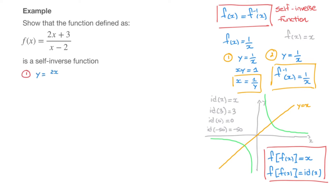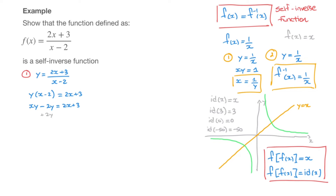Step 1: I start from y equals 2x plus 3 over x minus 2, and rearrange to make x the subject. I get rid of the denominator x minus 2 by multiplying both sides by x minus 2, giving y times x minus 2 equals 2x plus 3. I distribute: xy minus 2y equals 2x plus 3. I add 2y to both sides, leading to xy equals 2x plus 2y plus 3. Then I subtract 2x from both sides: xy minus 2x equals 2y plus 3.